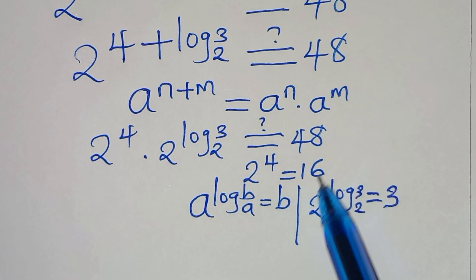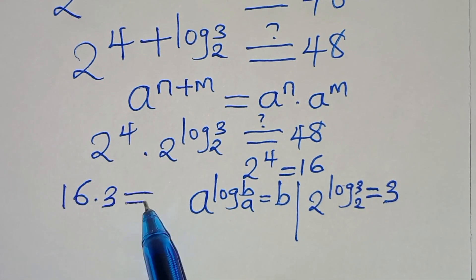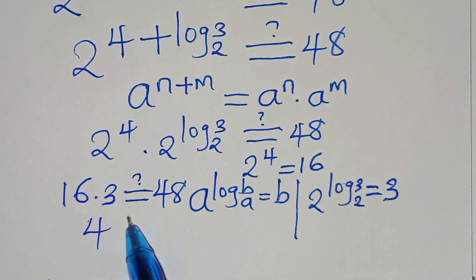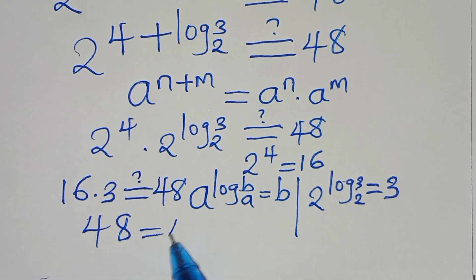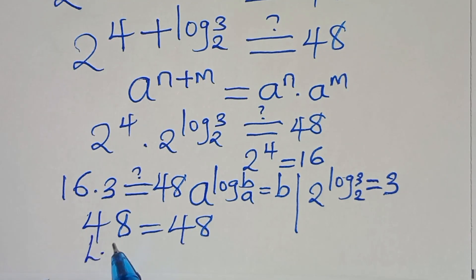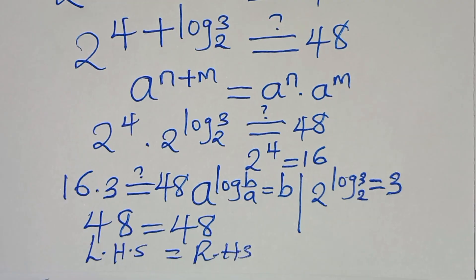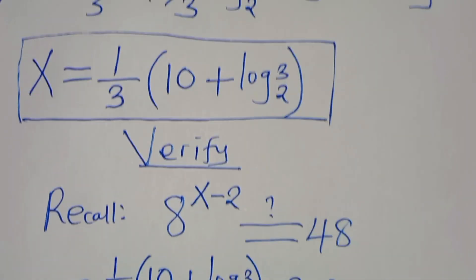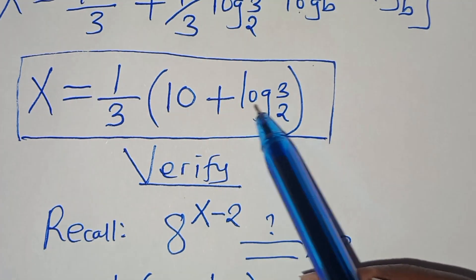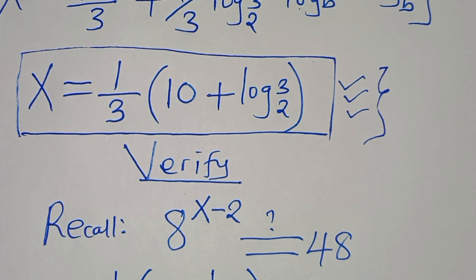Substituting 16 and 3, we have 16 multiplied by 3, which equals 48. This confirms the left-hand side equals the right-hand side, so the value of x equals (1/3)(10 plus log base 2 of 3) satisfies the equation.